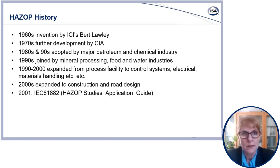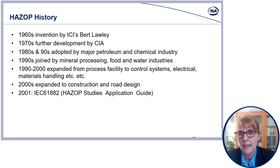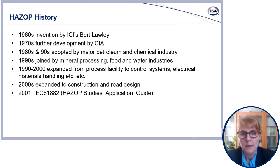The technique gained notoriety within the chemical industry after the process failure at Flixborough — a disaster that occurred in 1974, where a major industrial facility was destroyed after a failure to identify and manage the risk of loss of containment and subsequent vapour cloud explosion. The technique was further developed by the UK Chemical Industries Association in the 1970s and became more widely used in the 1980s, with major chemical and petroleum process industries coming on board, and other types of industries such as mineral processing, food and water industries following suit in the late 1980s and 1990s.